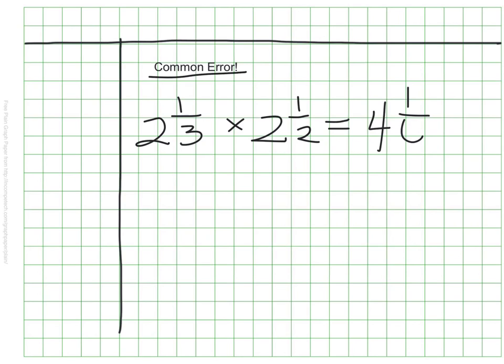There's one more thing I'm going to show you here, and that is a common error that I see a lot with sixth graders. So I'm going to show it to you now, and hopefully we can avoid making this mistake. When given the problem two and one-third times two and a half, I often see this answer, four and one-sixth.